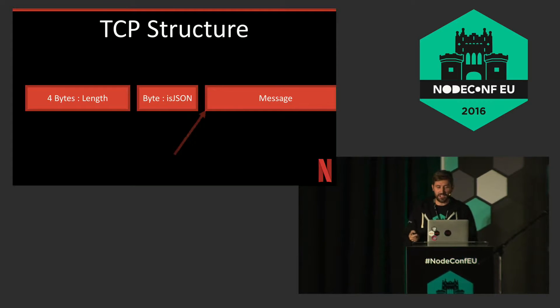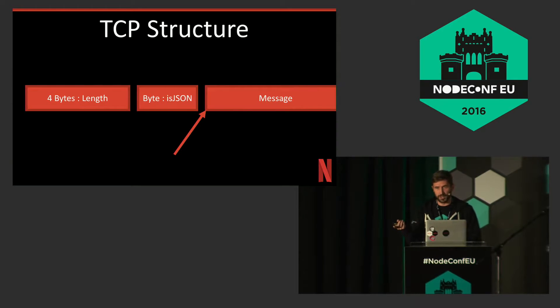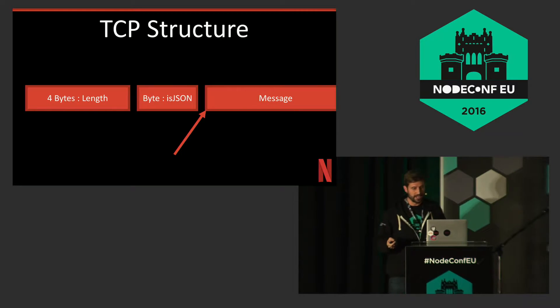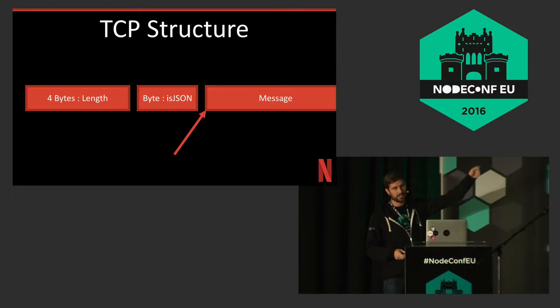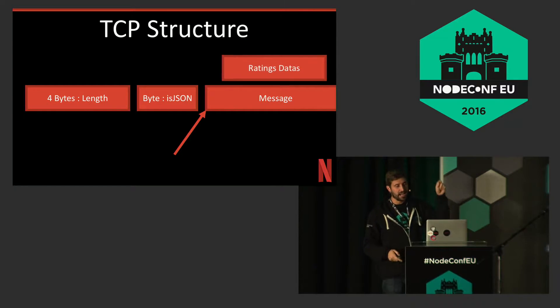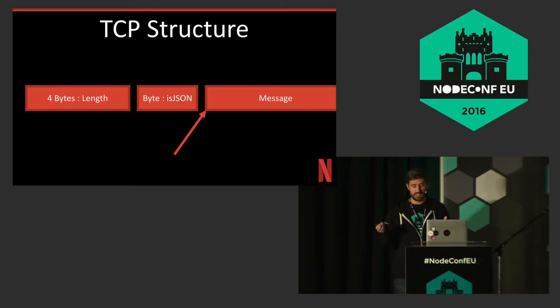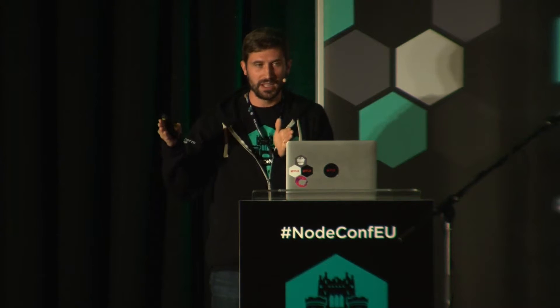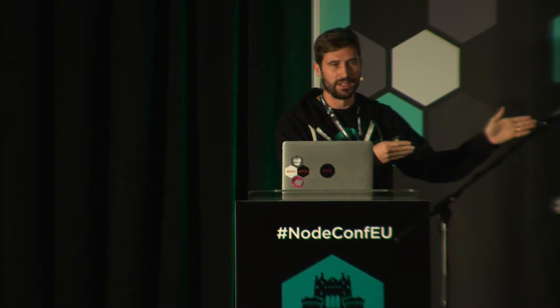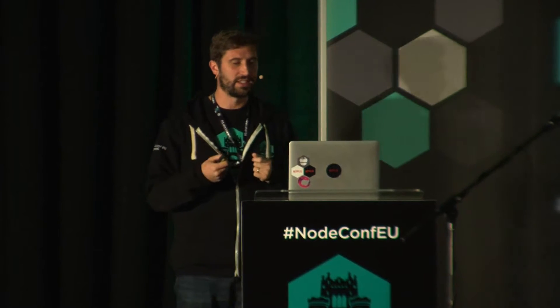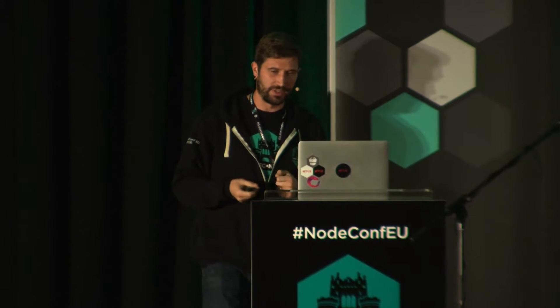Whereas with FlatBuffers, I could just point to the message, say you're Lolomo, crawl it, get all the IDs out, send off to the rating service, and when it comes back just put that data directly into the message. I don't need to worry about it, because this message stays the exact same size. My original TCP structure still works. I can just send it on its way to the user. This makes a very efficient communication pattern — minimal zero-copy that you can do in Node.